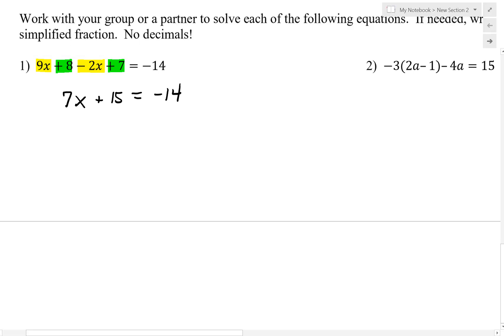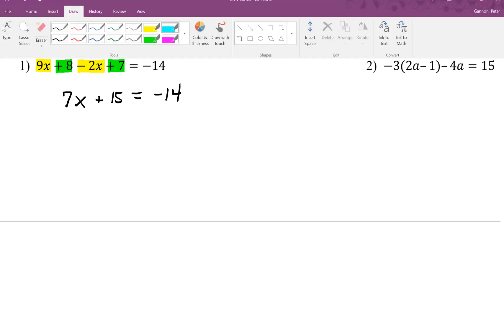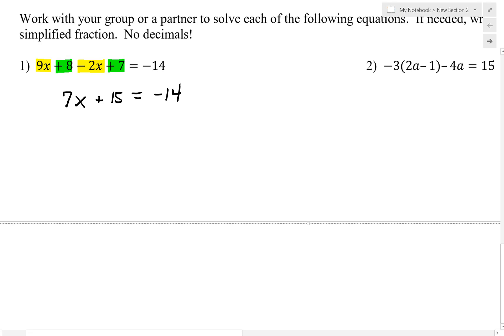Once you have simplified both sides of the equation, the goal is to get the variable by itself. In this case, we need to get the x by itself. In order to do that, the first thing we're going to do is subtract 15 from both sides of the equation. Whatever you do on one side, you have to do to the other. We're going to use inverse operations to cancel things out. Subtraction is the inverse of addition.